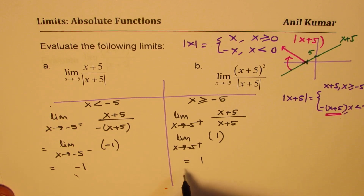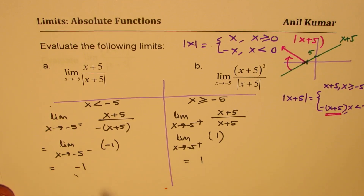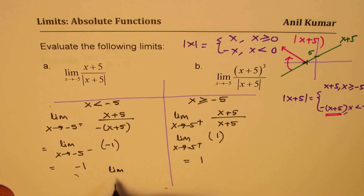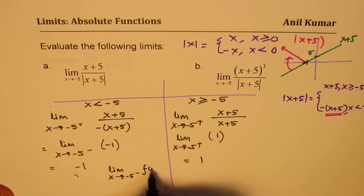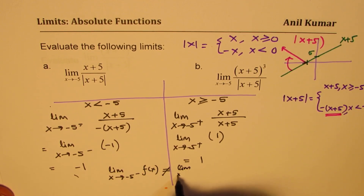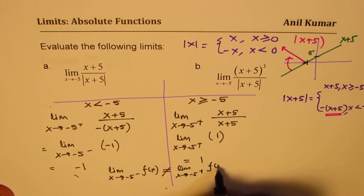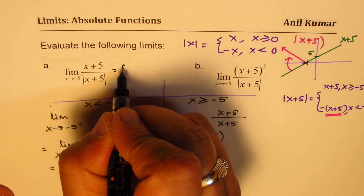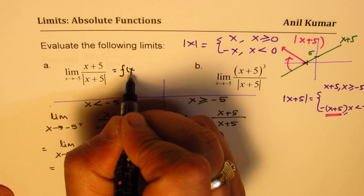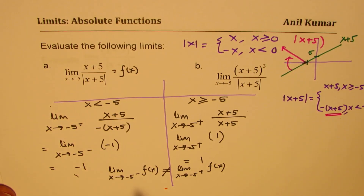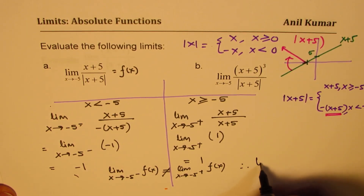These two limits are not the same. The limit as x approaches minus 5 from the left side of f(x) is not equal to the limit as x approaches minus 5 from the right side of f(x). Therefore the limit does not exist for this question.